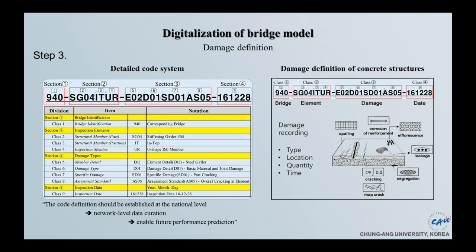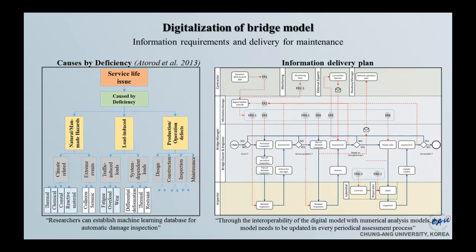In damage recording, type, location, quantity, and time are very important — we have to collect them. Once you have agreement for different bridges you can collect certain data, for example corrosion time and crack time for fatigue. So you can collect it and find a way to better maintenance. We also have to set up the information delivery plans.